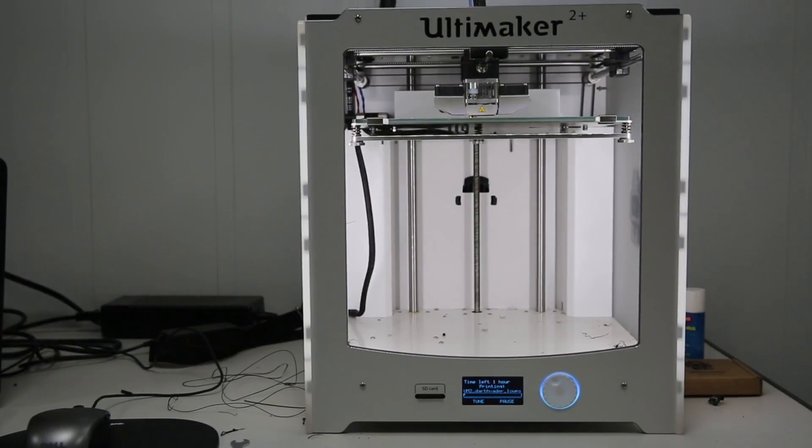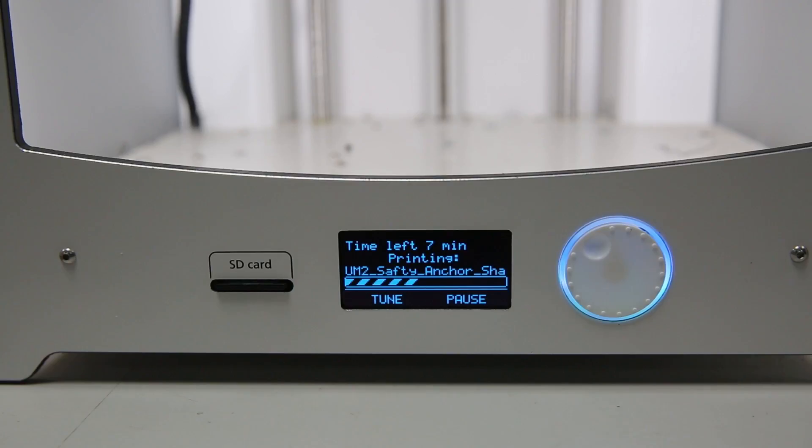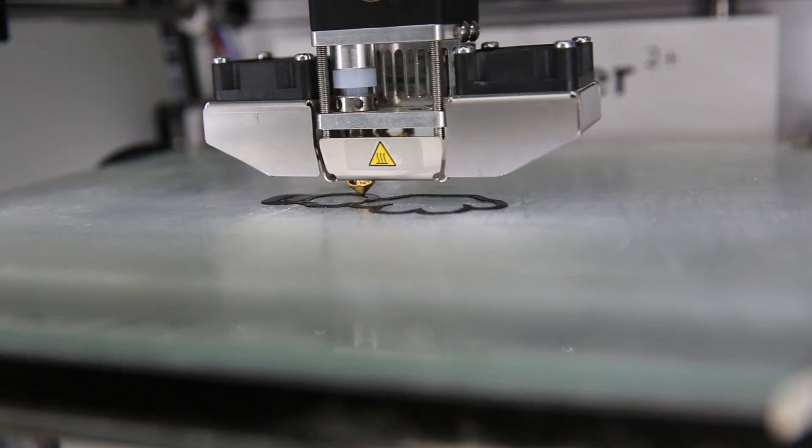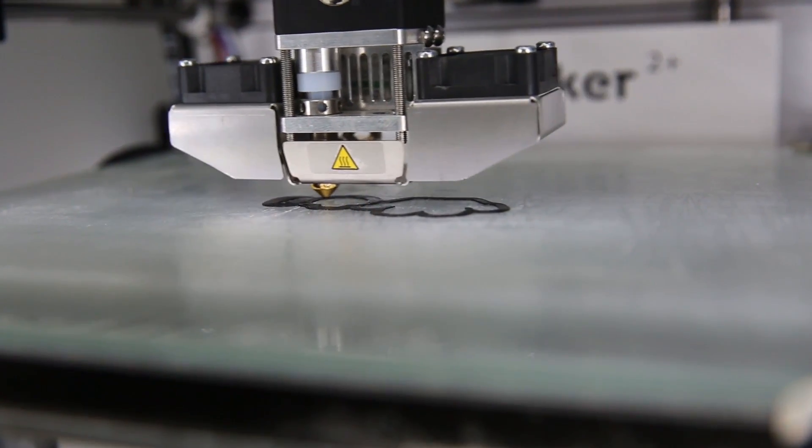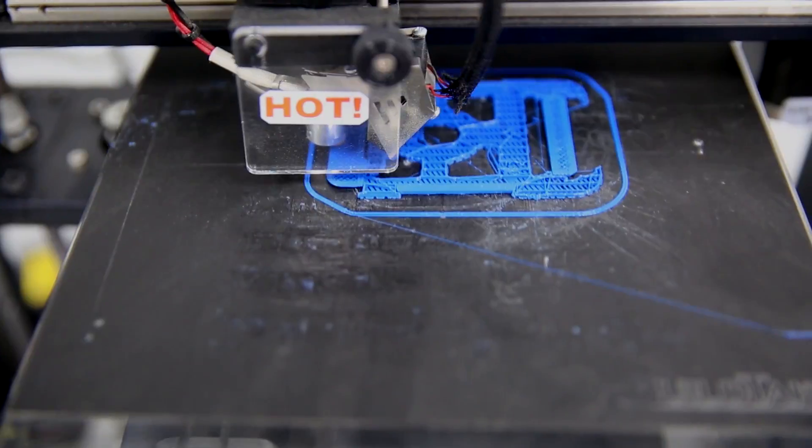Right now we have two printers. They can print in a couple of types of plastic. We're also going to be moving into fiberglass, Kevlar, nylon, high strength high temperature materials, and carbon fiber.